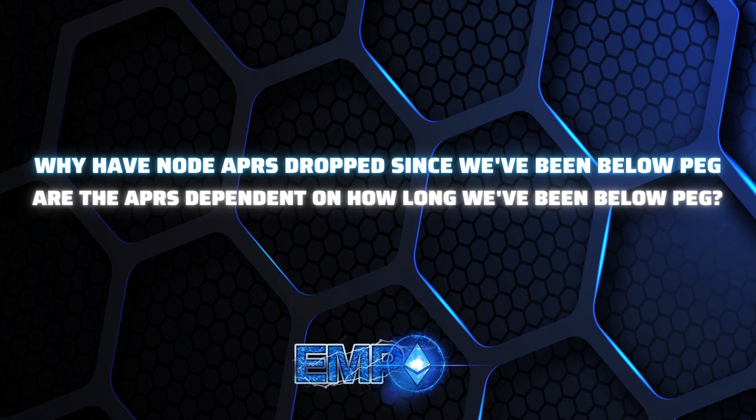That reduction is done on purpose — it's a way for our system to protect itself. If you're going into nodes just to yield EMP and then dump that EMP for profit, you're doing it wrong. There's another level of protection in the economics of the protocol. The idea is that you want to accumulate EMP through nodes and then use that EMP to go into the farm.